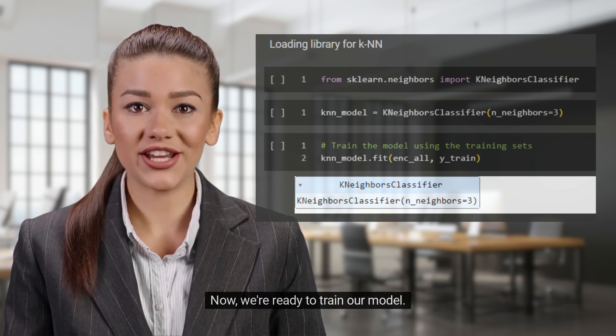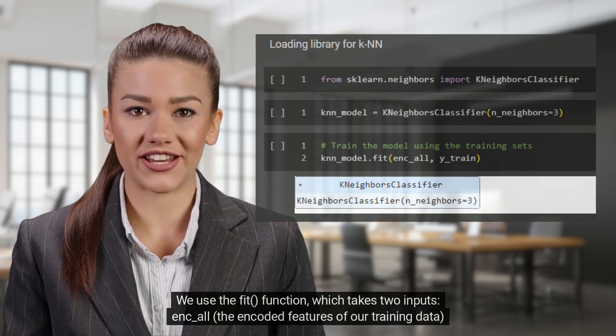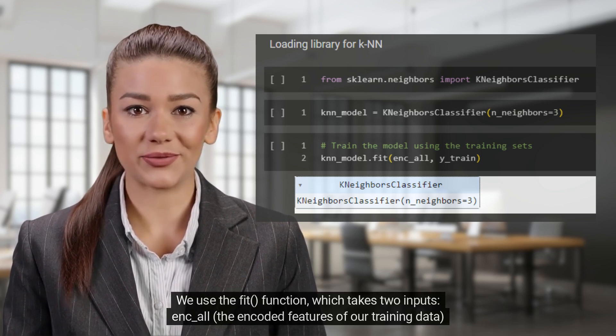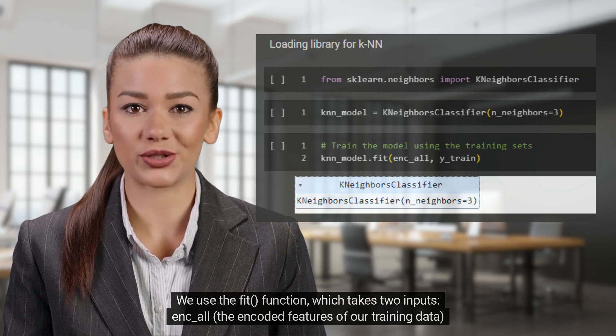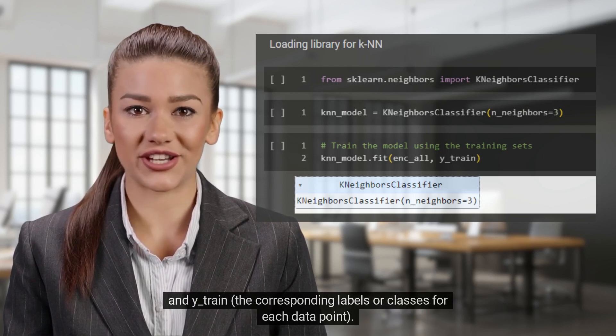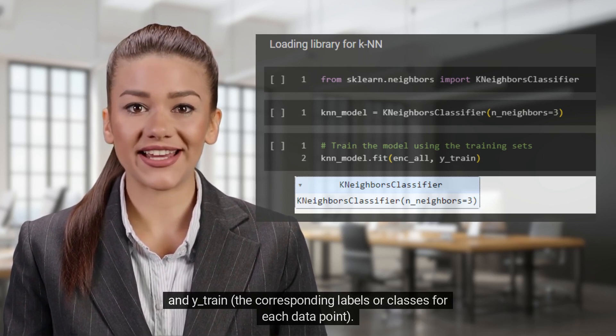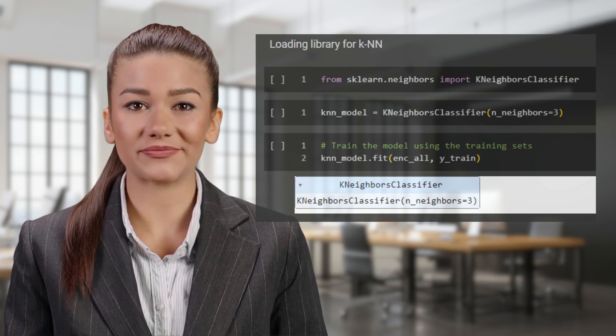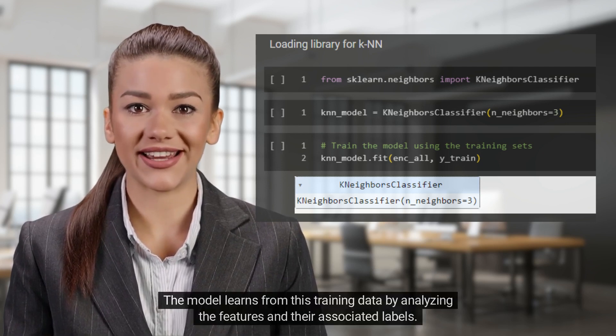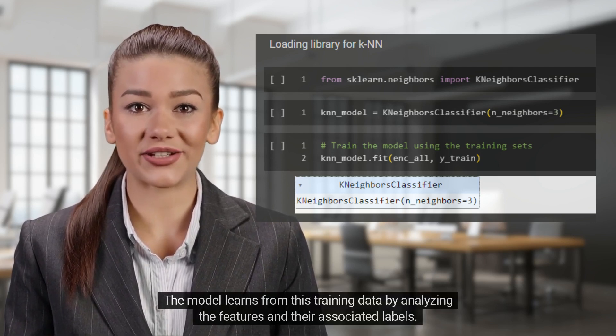Now, we're ready to train our model. We use the fit function, which takes two inputs: X_train, the encoded features of our training data, and y_train, the corresponding labels or classes for each data point. The model learns from this training data by analyzing the features and their associated labels.